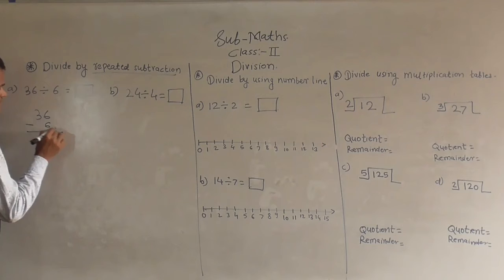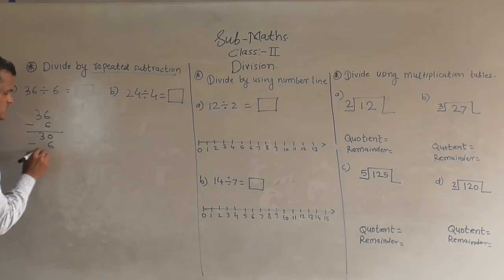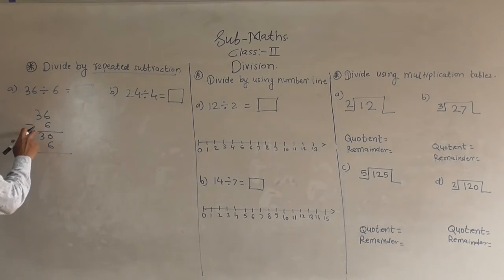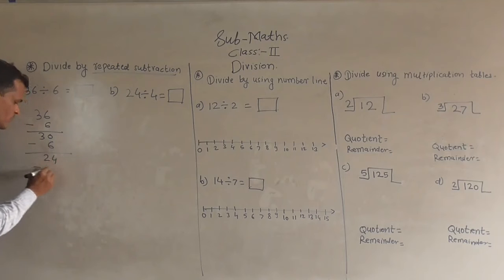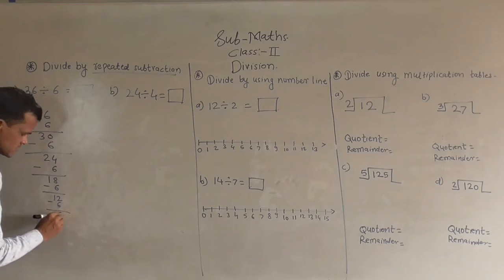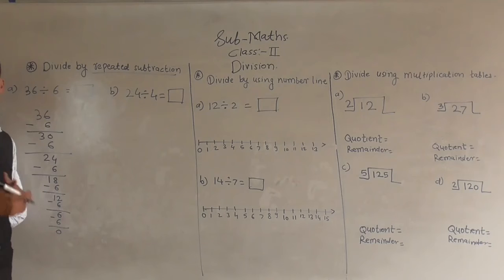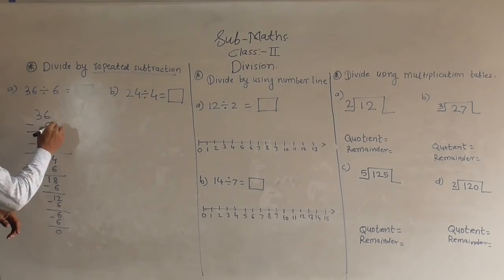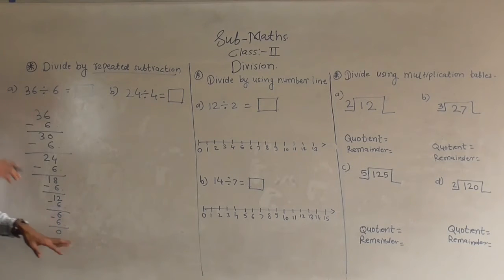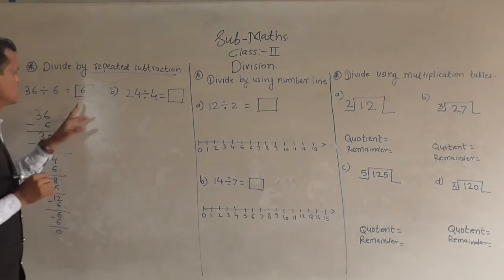36 minus 6: 6 minus 6 is 0, so 36 minus 6 is 30. Then again subtract 6 using backward counting: 30 minus 6 is 24, 24 minus 6 is 18, 18 minus 6 is 12, 12 minus 6 is 6, and 6 minus 6 is 0. When 0 comes, stop the process and count how many times you subtracted 6: 1, 2, 3, 4, 5, 6 times. You subtracted 6 six times, so the remainder is 0.